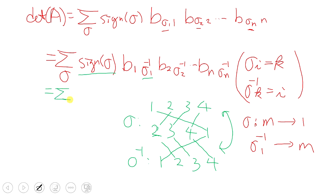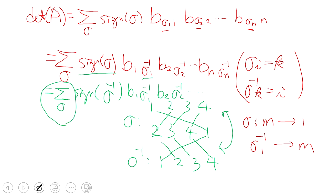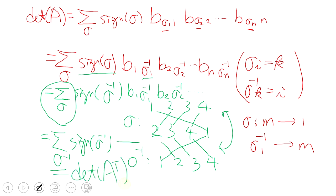So we can write the sum over all permutations sigma of sign(sigma^{-1}) × b_{1,sigma^{-1}(1)} × b_{2,sigma^{-1}(2)} × ... × b_{n,sigma^{-1}(n)}. Since sigma is a bijection, summing over all sigma is the same as summing over all sigma^{-1}. By definition, this is the determinant of A transpose — and that completes the proof.